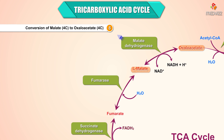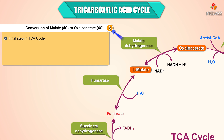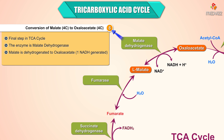Step 8 is the conversion of malate to oxaloacetate, the final step in the citric acid cycle. The enzyme is malate dehydrogenase. Malate is dehydrogenated to oxaloacetate, and one NADH is generated. Oxaloacetate has a catalytic role in the cycle, similar to ornithine in the urea cycle.